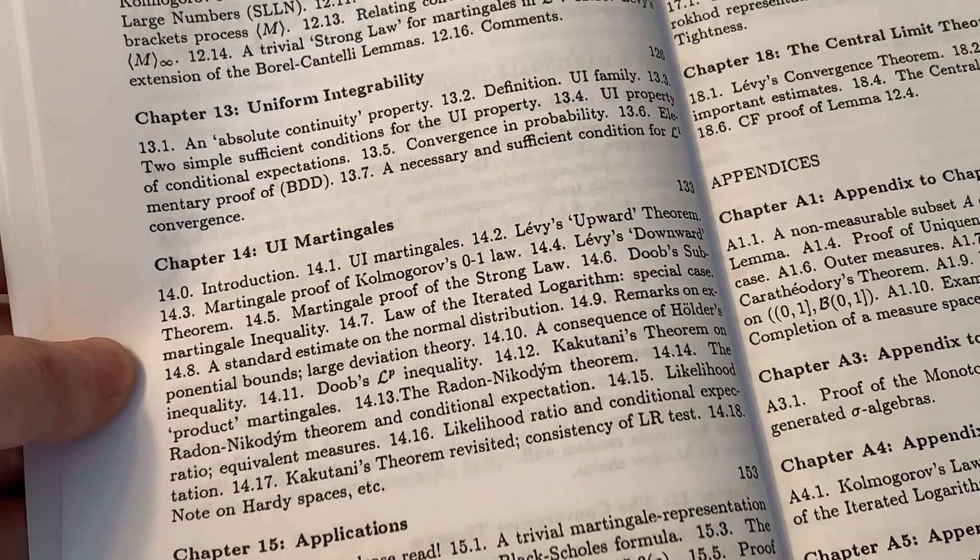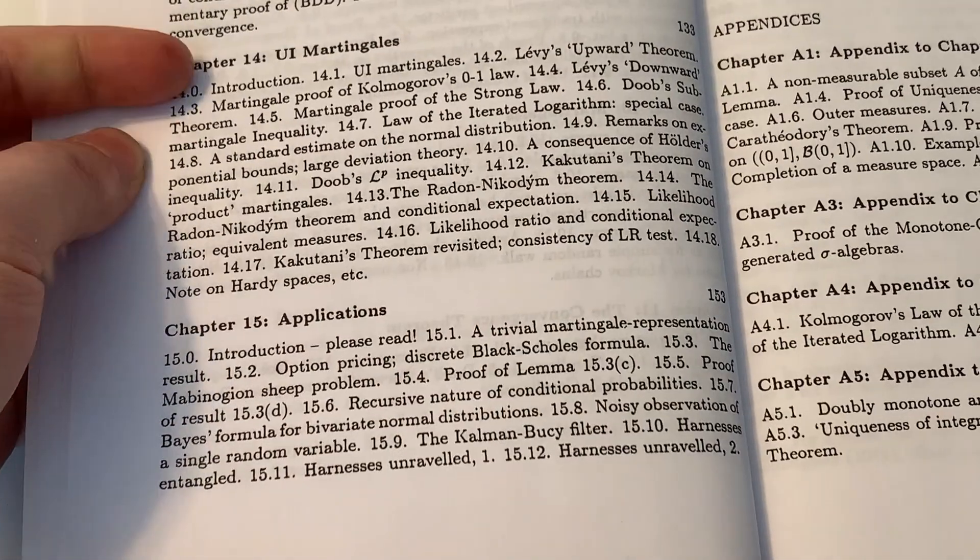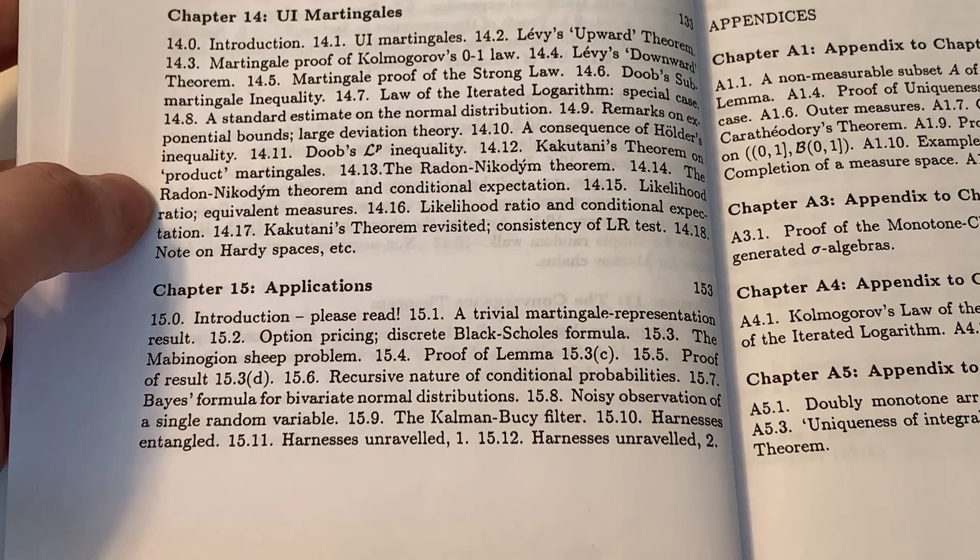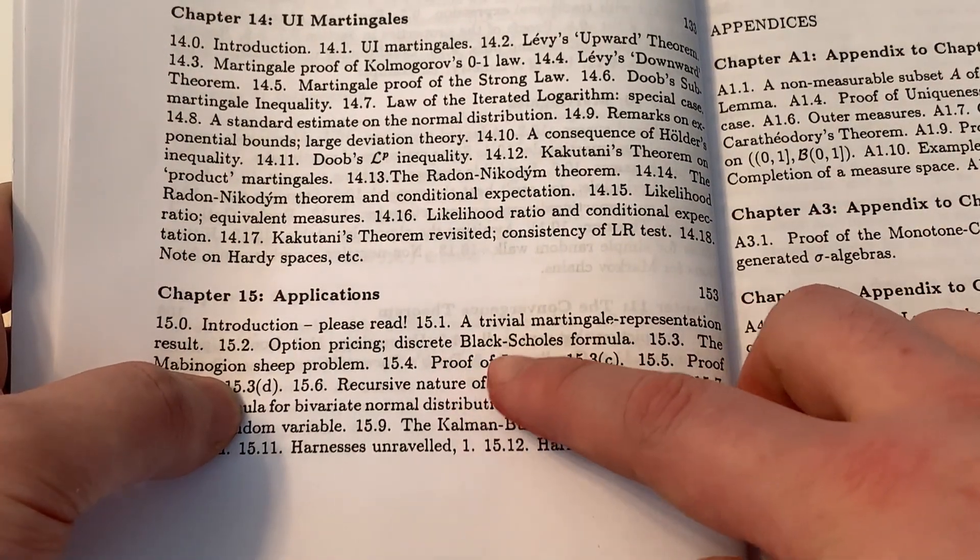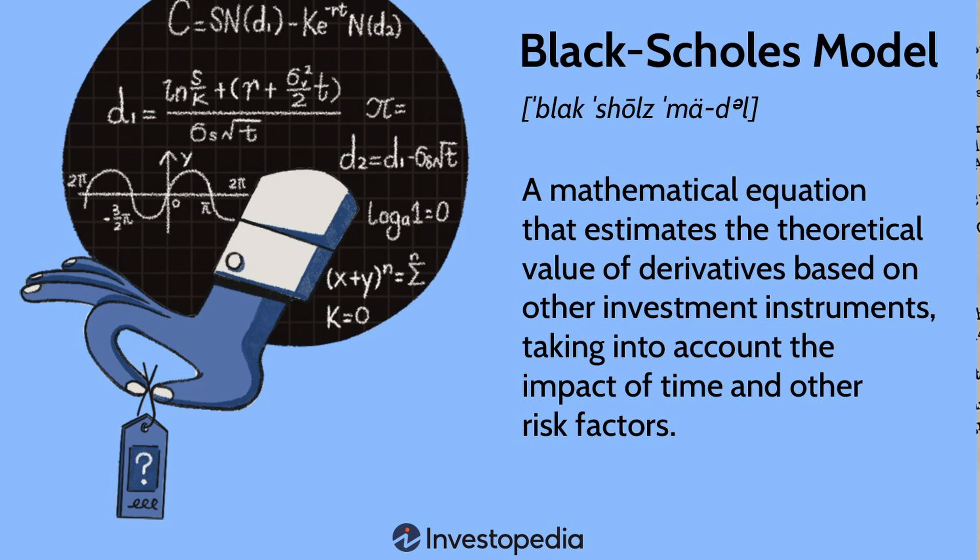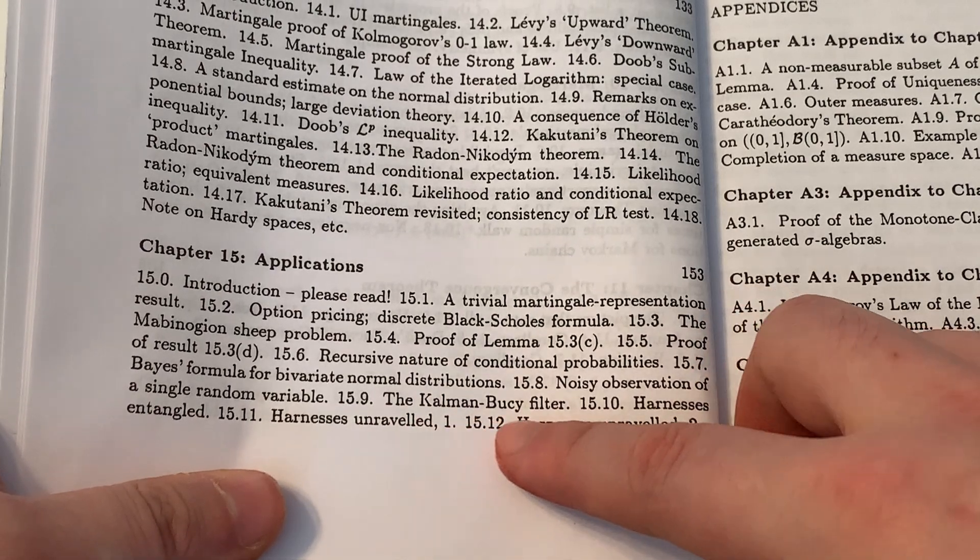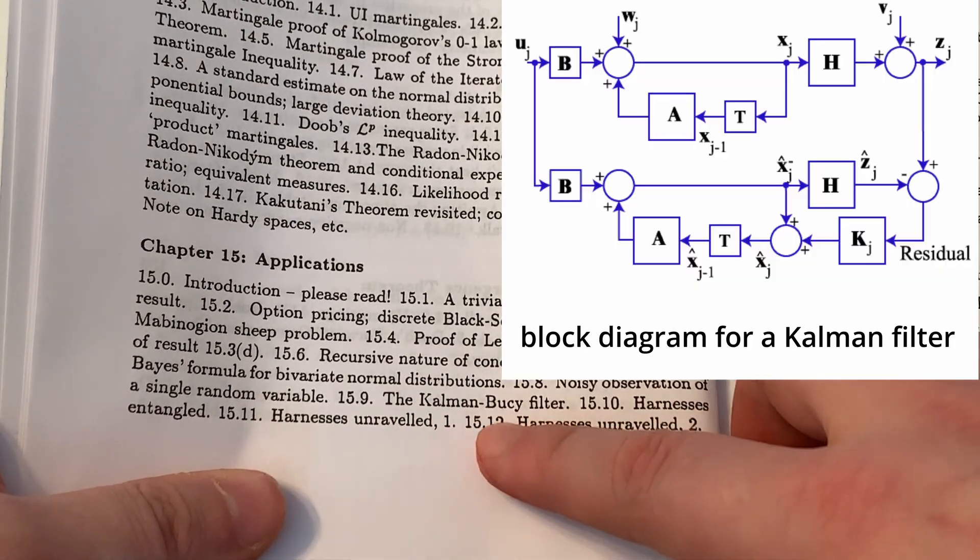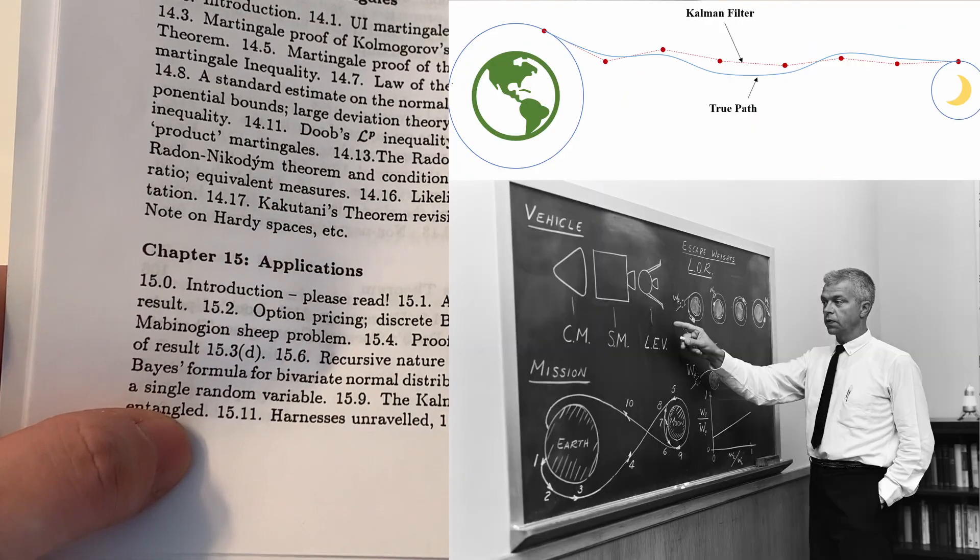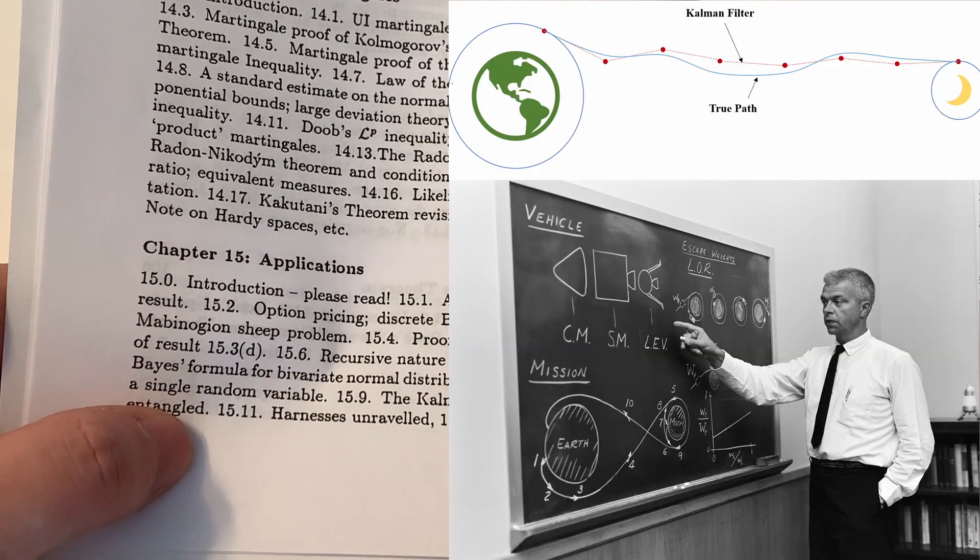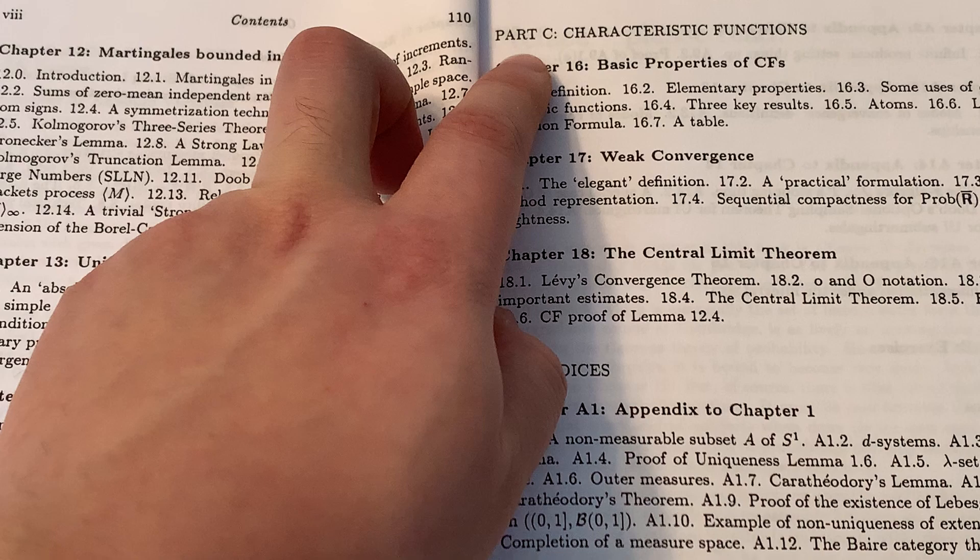I'm skipping a few chapters that are more technical. We have applications. Now the hard work has finally paid off. Notable applications including the Black-Scholes formula. I think it's fair to say that this is a landmark result in modern portfolio theory. Also 15.9, the Kalman-Bucy filter. This is fundamental in control theory and in engineering. One of the first applications of the Kalman filter is mankind's first voyage to the moon. And the last part, part C,